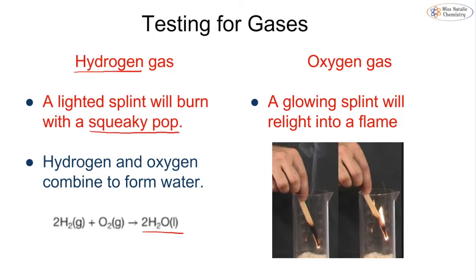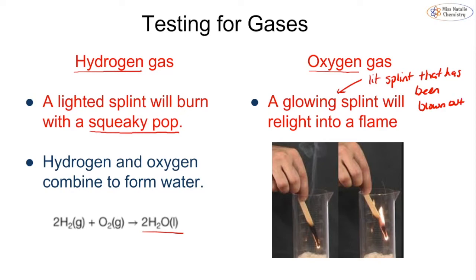If we think our gas is oxygen we carry out a different test. We take a wooden splint, light it, then blow it out so that it is glowing — this is a glowing splint. If we put that into our suspected oxygen it will relight into a flame. Instead of just glowing, the actual flame comes back, and that is a positive test for oxygen.